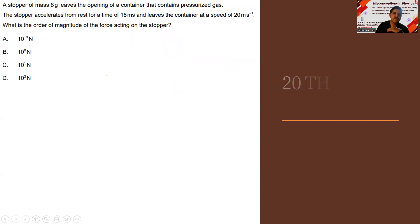Next: A stopper of mass 8 grams leaves the opening of a container that contains pressurized gas. The stopper accelerates from rest, u equal to zero, for a time of 16 milliseconds, and leaves the container at a speed of 20 meters per second, v equal to 20 meters per second.